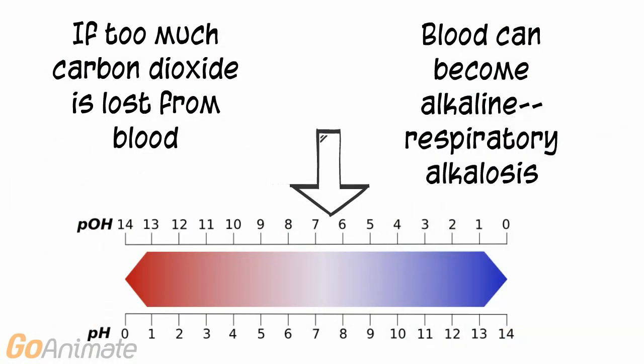Likewise, if too much carbon dioxide leaves the lungs, the hydrogen ion concentration decreases in the blood, causing it to become alkaline. This condition is called respiratory alkalosis. You can induce a state of respiratory alkalosis by hyperventilating.